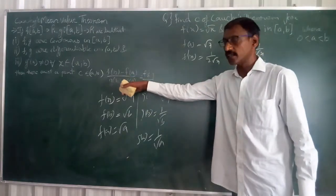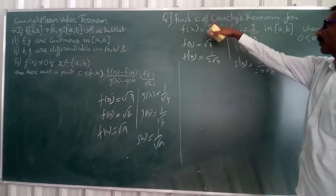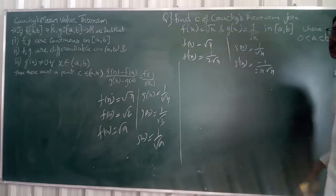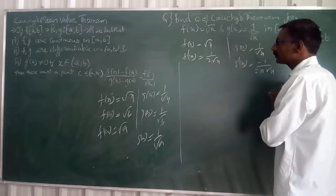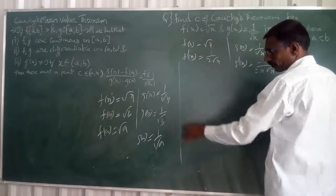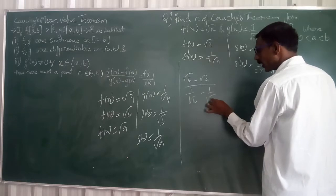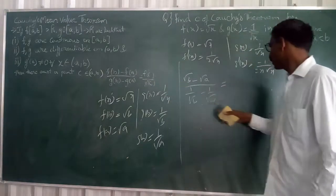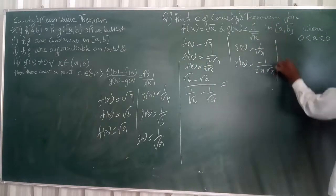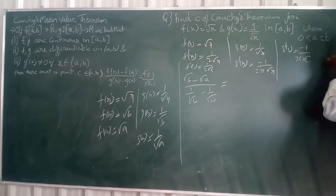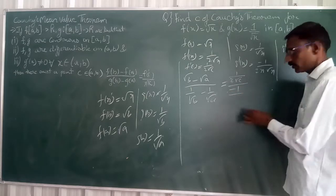So by taking all these values here, by Cauchy's mean value theorem we have to find C. By Cauchy's mean value theorem, here f(x) and g(x) are two functions in the interval [A, B]. So now can I take, here f(B), that is √B - √A, divided by 1/√B - 1/√A is equal to f'(C)/g'(C). Here we need to find C. f'(C) is equal to 1/(2√C). So here g'(C) is equal to -1/(2C√C). By taking both, 1/(2√C) divided by -1/(2C√C).